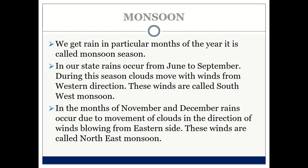Monsoon season, or rainy season, takes place in particular months of the year. In our state, rains occur from June to September. During this season, clouds move with winds from the western direction — these winds are called southwest monsoons. In the months of November and December, rains occur due to movement of clouds in the direction of winds blowing from the eastern side, and these winds are called the northeast monsoon.